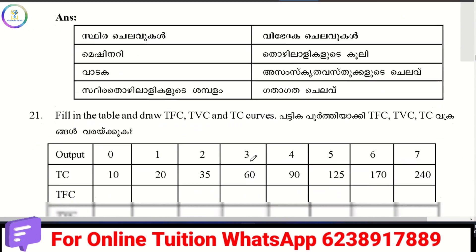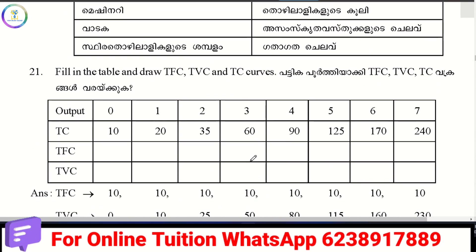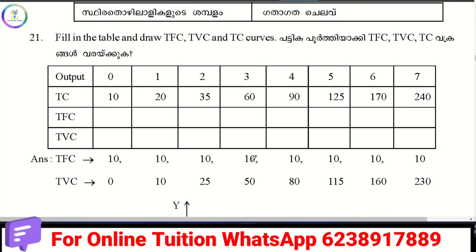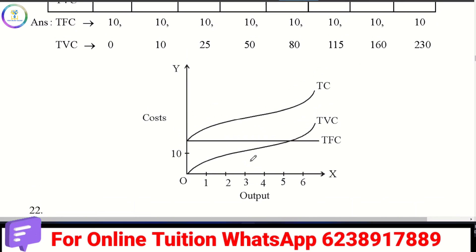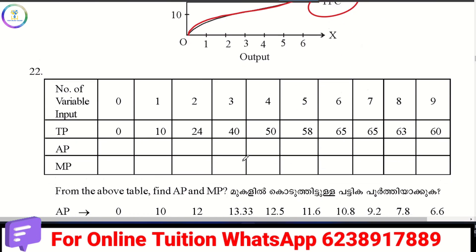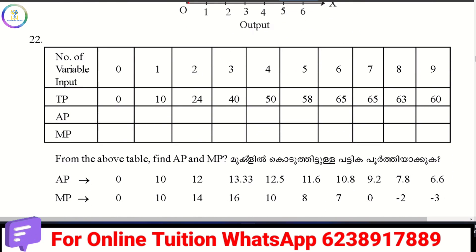In the 21st question, if you are asked TFC, TVC, and TC, you can start with TFC. Then AP and MP as well. The equation for AP is TP by Q and for MP as well.